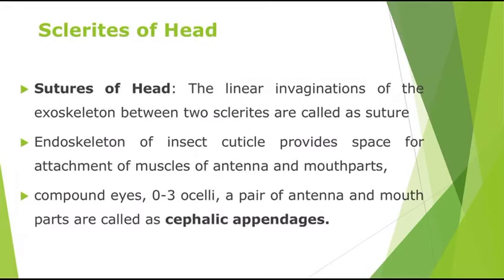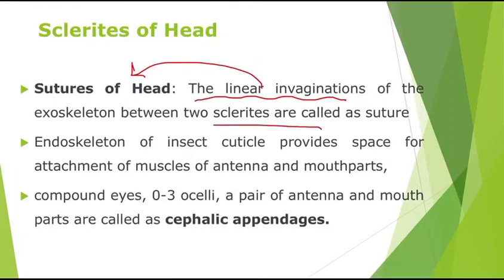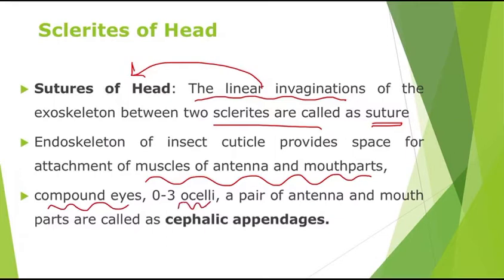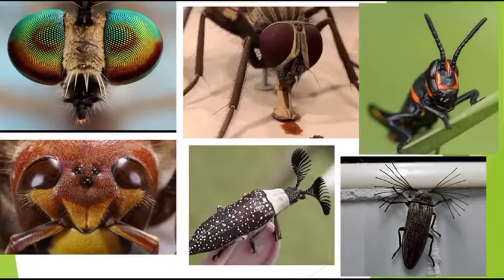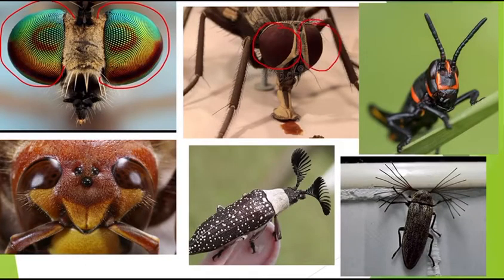These plate-like structures are divided by linear invaginations called sutures of the head; between two sclerites you can see one suture. The interskeleton of the insect's cuticle provides space for attachment of cephalic appendages like antenna and mouth parts. Apart from these, an insect's head also has compound eyes and simple eyes called ocelli. Here you can see ocelli placed on the head as an inverted triangle.